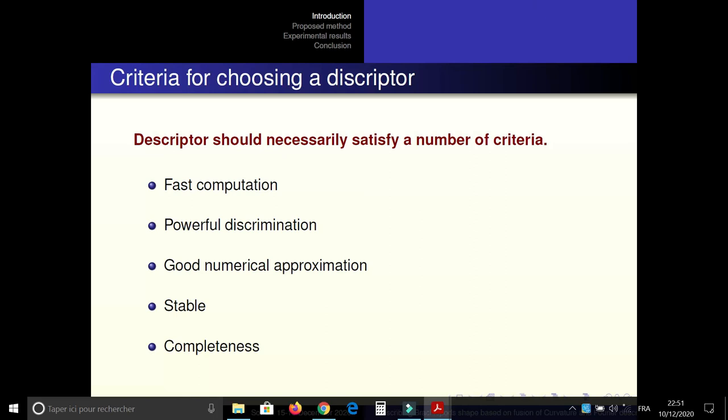Completeness. This criteria was first introduced by Granlund. It guarantees that two shapes have the same set of invariance if and only if they have the same shape.